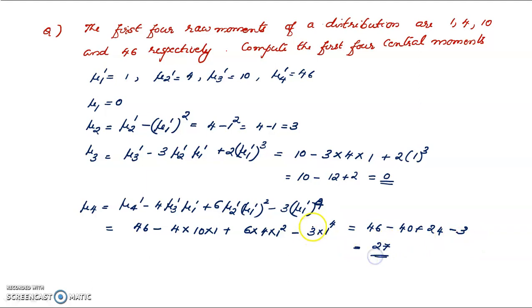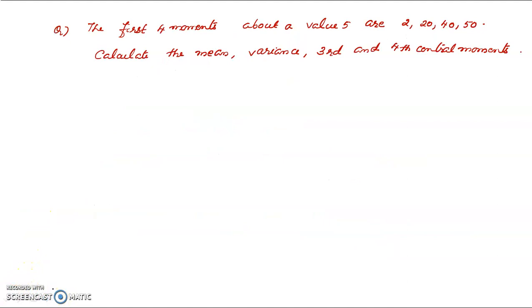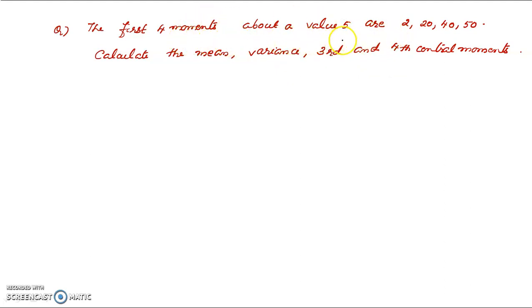So these are the central moments corresponding to the raw moments. Now the second problem: the first four moments about the value 5 are 2, 20, 40 and 50. We calculate the mean, variance, third and fourth central moments. The moments about the value 5 are raw moments about origin 5.